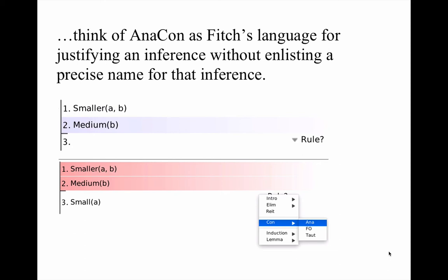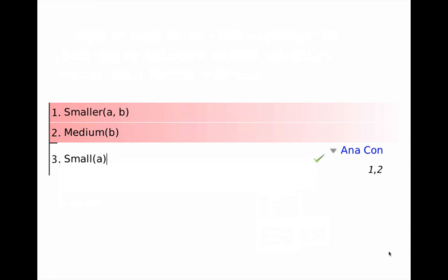Suppose you have the following premises: A is smaller than B; B is medium. The inference — which is simply an analytical consequence of the premises — is that A must be small. So step three is the inference: A is small. We highlight premises one and two and choose Anacon as our justification. When we do that and click the verify button, we get a check mark. Anacon shows, without naming a specific rule, that an inference is valid — more precisely, that the inference is an analytical consequence of the premises.